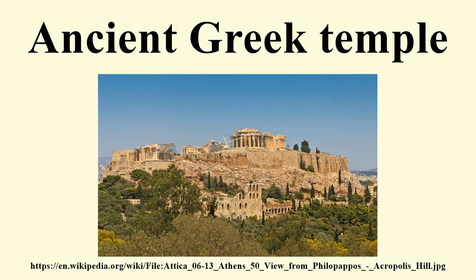A multitude of different ground plans were developed, each of which could be combined with the superstructure in the different orders. From the 3rd century BC onwards, the construction of large temples became less common, after a short 2nd century BC flourish, and ceased nearly entirely in the 1st century BC. Thereafter, only smaller structures were newly begun, while older temples continued to be renovated or completed.